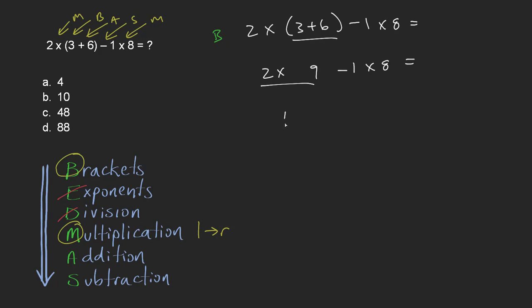2 times 9 is 18, and this is minus 1 times 8—that's 8. So 18 minus 8 remains. So I dealt with my multiplication here.